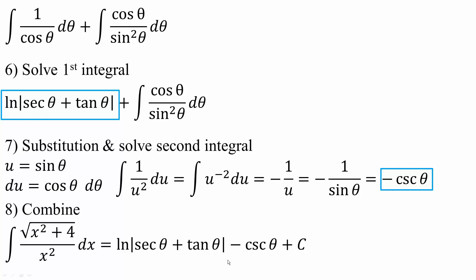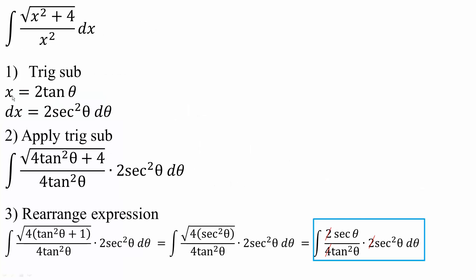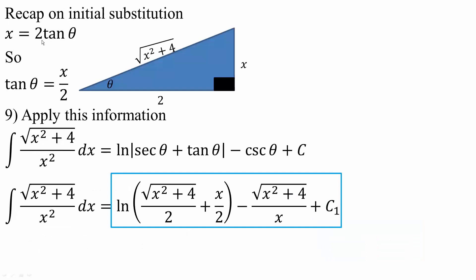However we're not done yet — the problem was given in x, not theta. Initially we said x equals 2 tan theta, so tan theta equals x over 2. Tan is opposite over adjacent, so opposite is x, adjacent is 2, and the hypotenuse is the square root of x squared plus 4, since 2 squared is 4.